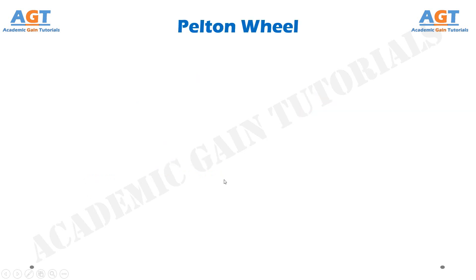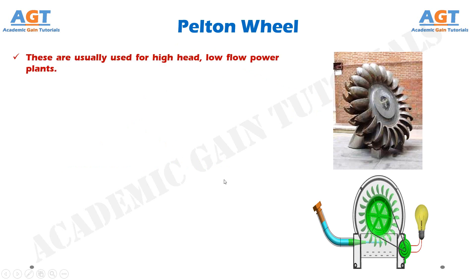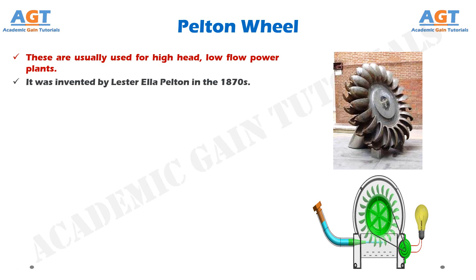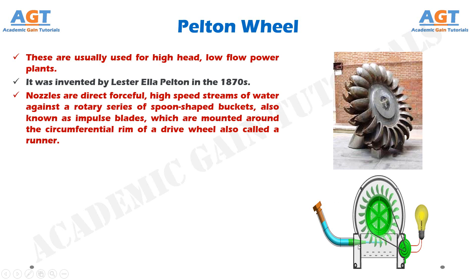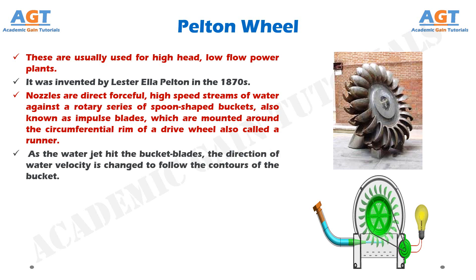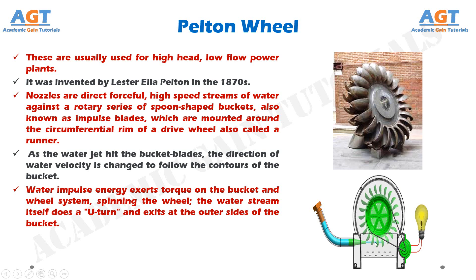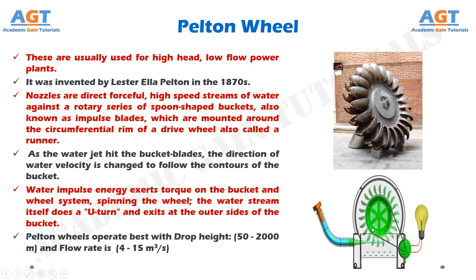The Pelton wheel turbine is usually used for high-head, low-flow power plants. It was invented by Lester L. Pelton in the 1870s. Nozzles direct forceful, high-speed streams of water against a rotary series of spoon-shaped buckets, also known as impulse blades, which are mounted around the circumferential rim of a drive wheel called a runner. As the water jet hits the bucket blades, the direction of water velocity is changed to follow the contours of the bucket. Water impulse energy exerts torque on the bucket and wheel system, spinning the wheel. The water stream does a U-turn and exits at the outer sides of the bucket. Pelton wheels operate best with drop height 50 to 2,000 meters and flow rate of 4 to 15 cubic meters per second.